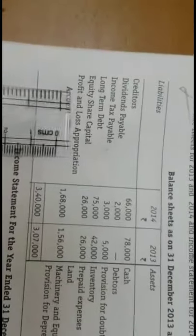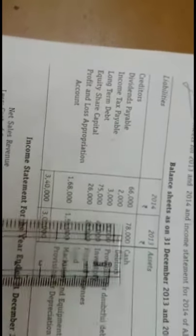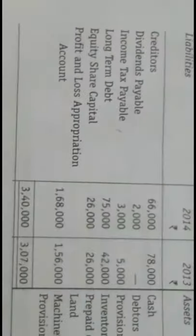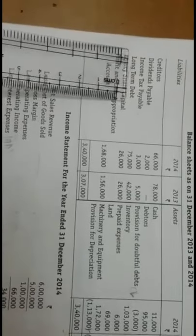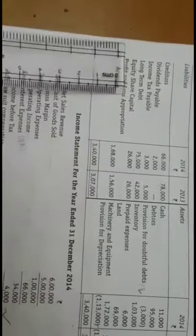Moving to the liability side of the balance sheet: creditors — previous year Rs. 78,000, current year Rs. 66,000 — there has been a decrease in current liability of Rs. 12,000, which should be deducted. From the income statement, interest expenses paid is Rs. 4,000. Dividend payable account, income tax payable account, and long-term debt are all complete.